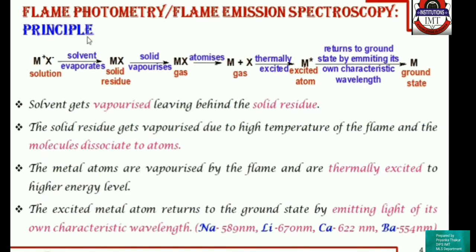We will look into the principle. When the solution to be analyzed is sprayed over the flame, the solvent first evaporates leaving behind the solid residue. Due to the high temperature of the flame, the solid vaporizes to gaseous form, which then atomizes to form its atoms. Due to the high temperature of the flame, the metal atom gets thermally excited to the next higher state. It is not getting excited by absorbing light — it is getting excited by absorbing heat.